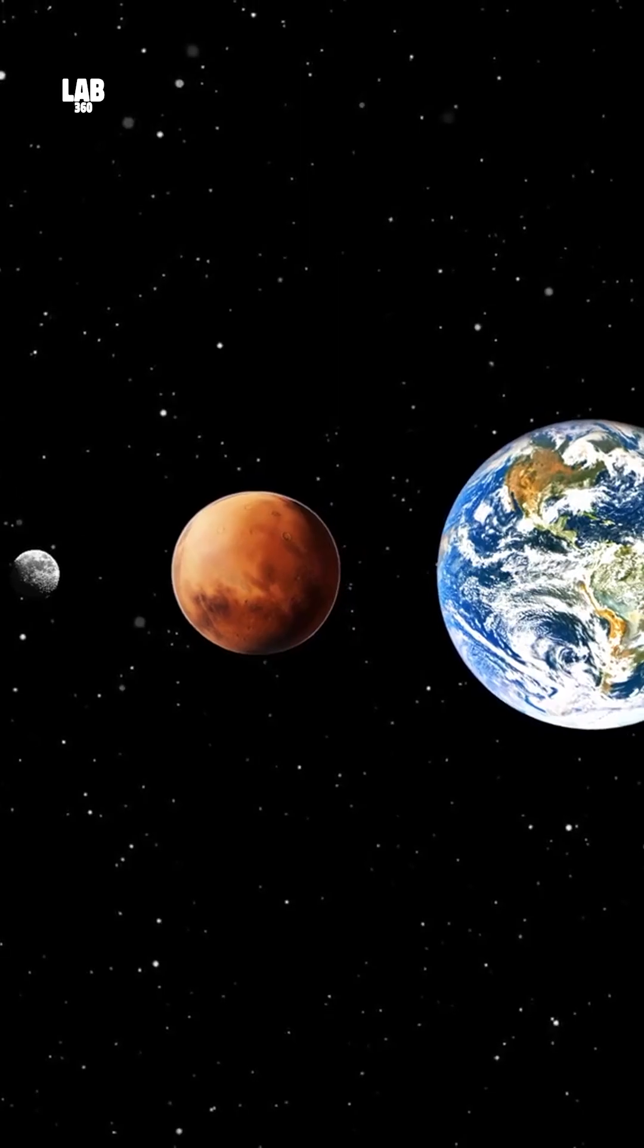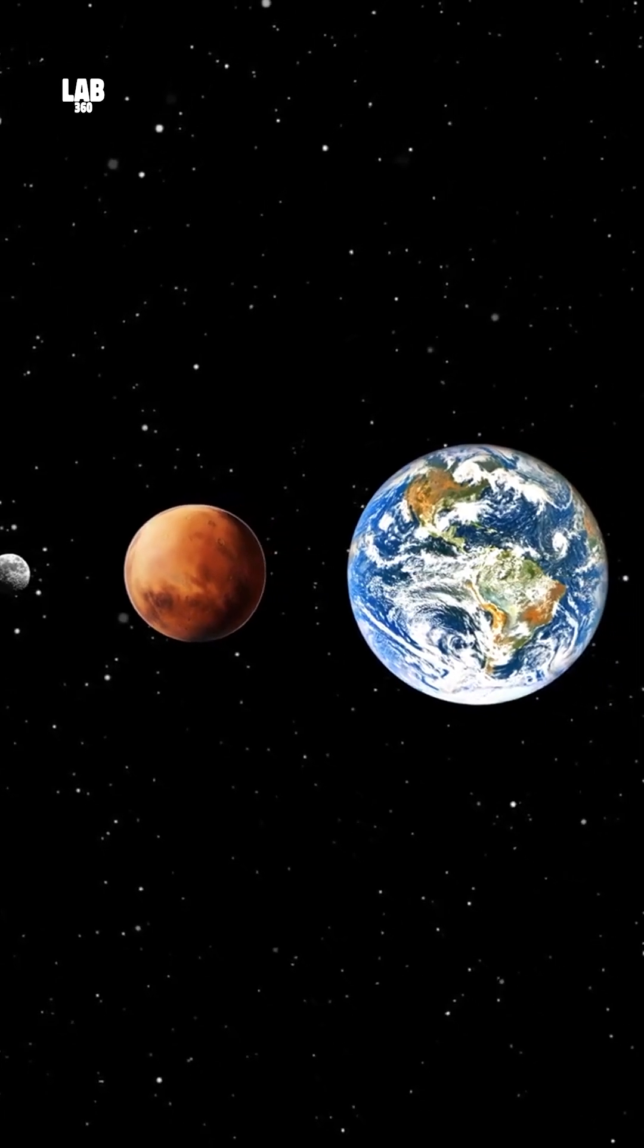Close to the sun, only metals and silicates could survive the heat, leading to the formation of small, rocky worlds like Earth and Mars.